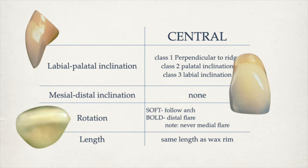In central teeth, major distal inclination should be none, meaning you need to make them perpendicular to the ridge.